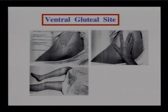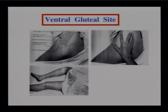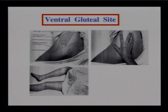The ventrogluteal site can be used when the patient is side-lying. Place the heel of the hand on the greater trochanter, put the index finger on the anterior superior iliac crest, spread the fingers, and that gives you the area for the IM injection. It can be hard to find these anatomical landmarks in overweight patients, but that's what to look for in exam questions about IM injections.